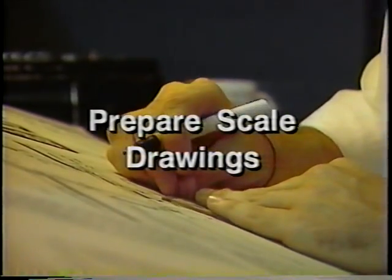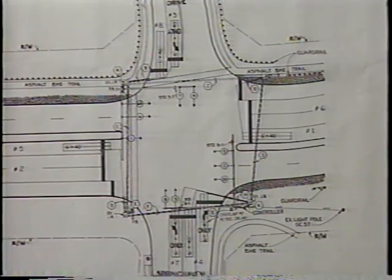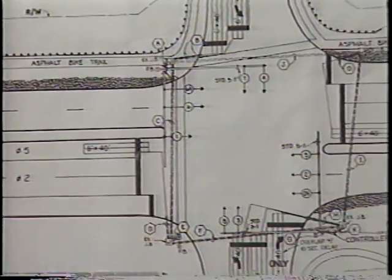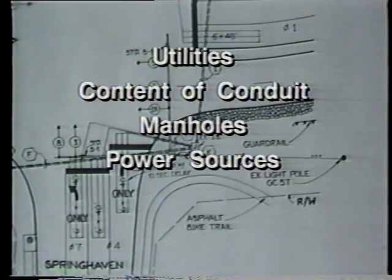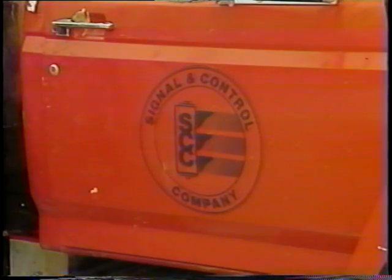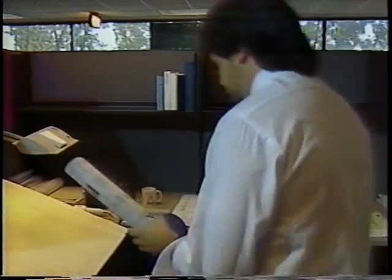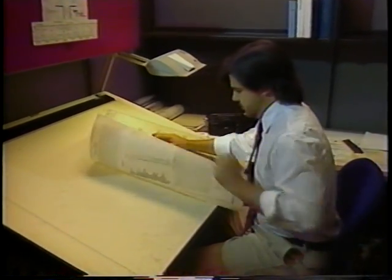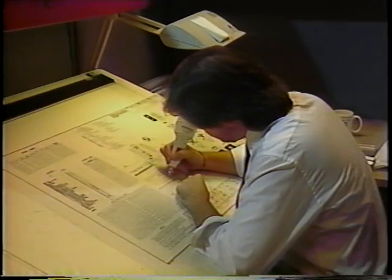Next, prepare scale drawings of the location, then arrange a field visit. A scale drawing should show the correct geometry of the roadway and the exact location of the in-road sensor element in relation to the stop lines. It should include the location of all underground utilities, conduit manholes, power sources, pavement materials, and any electrical equipment that would interfere with the installation. If the installation is performed by a contractor, the scale drawing becomes part of the procurement package and should be reviewed with the design engineer.